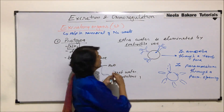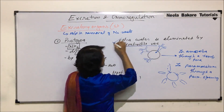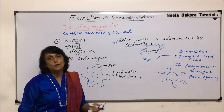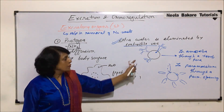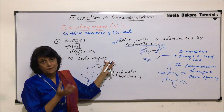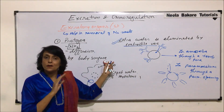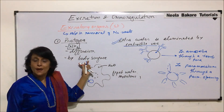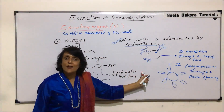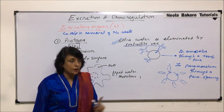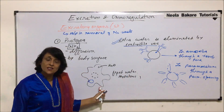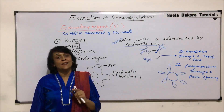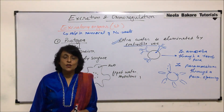Fresh water protozoans face the osmotic problem and have contractile vacuoles to eliminate excess water. Their body surface — just called the surface since they are unicellular — helps in removal of nitrogenous waste by diffusion, while contractile vacuoles help in removal of excess water entering due to the hypotonic outer medium.